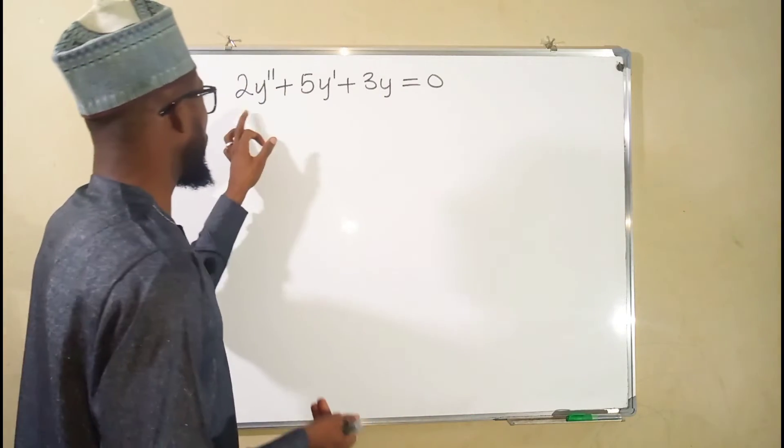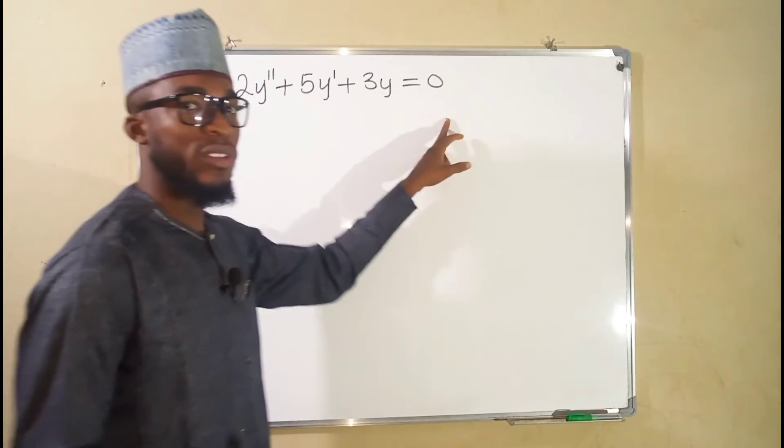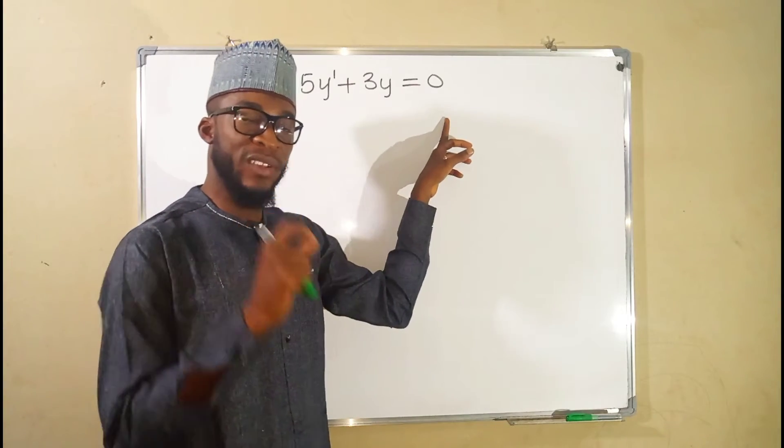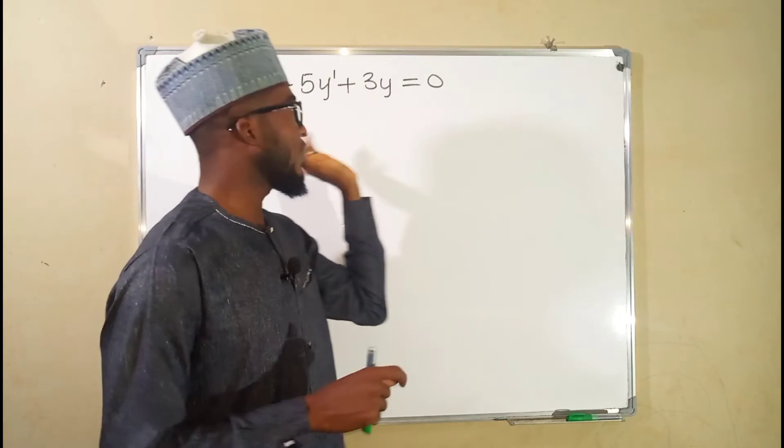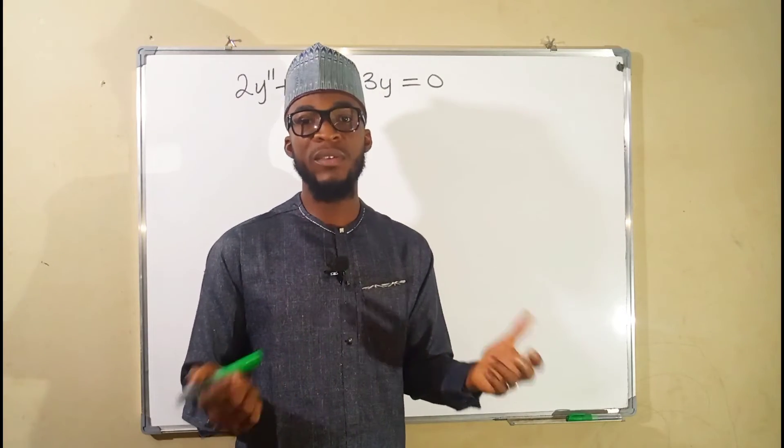We are given that 2y'' plus 5y' plus 3y equal to 0. Remember, the very first thing you need to do is to transform this equation into an auxiliary form of the characteristic equation.